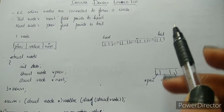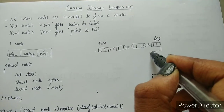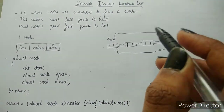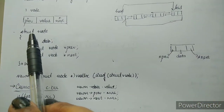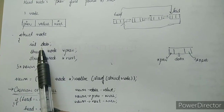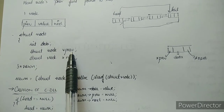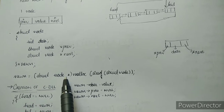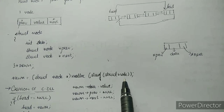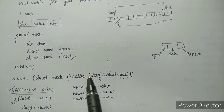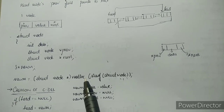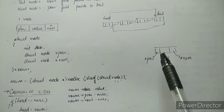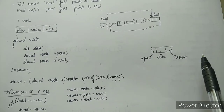Now this is a doubly linked list. If the tail points to head and if the head points to tail, then it's a circular doubly linked list. We will see its structure. The struct node has int data, struct node asterisk previous, and struct node asterisk next. New node is created using malloc for dynamic memory allocation, giving you a node with three fields and some garbage values initially.